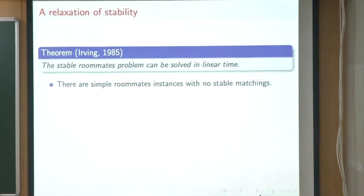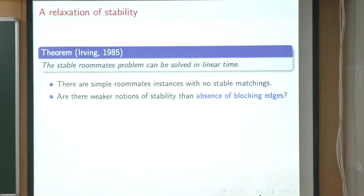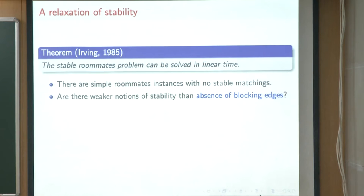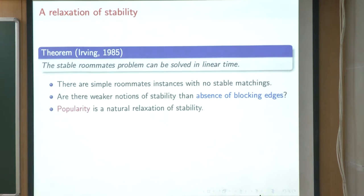However, as we saw with our starting example, there are simple instances with no stable matchings. That motivates the question: maybe forbidding blocking edges is too restrictive a notion of stability. Why don't we ask for a more relaxed notion of stability? That's where popularity comes in.